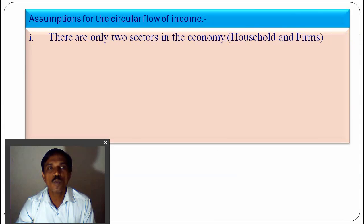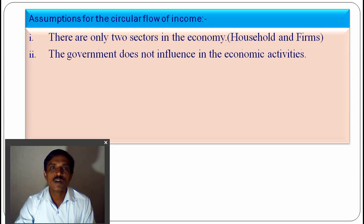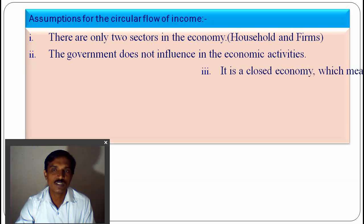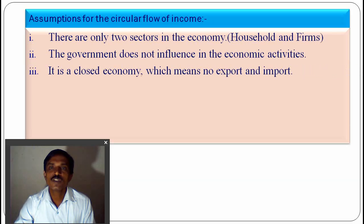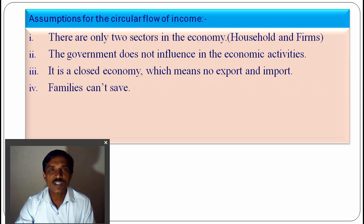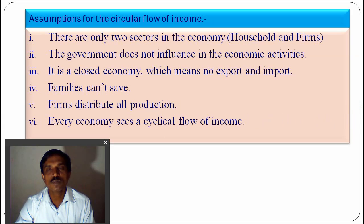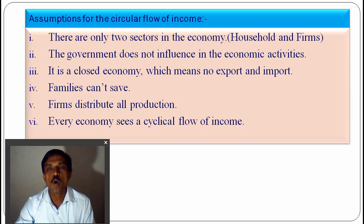Assumptions for this circular flow: there are only two sectors in the economy — one is the household and the other is the firm sector. The second assumption is that the government does not influence economic activity, meaning no exports and imports. It is a closed economy with only two sectors: household and firm. Families cannot save; they spend all their income on goods and services. The firms distribute all production and do not use any sub-production for self-consumption. Every economy sees a cyclical flow of income.